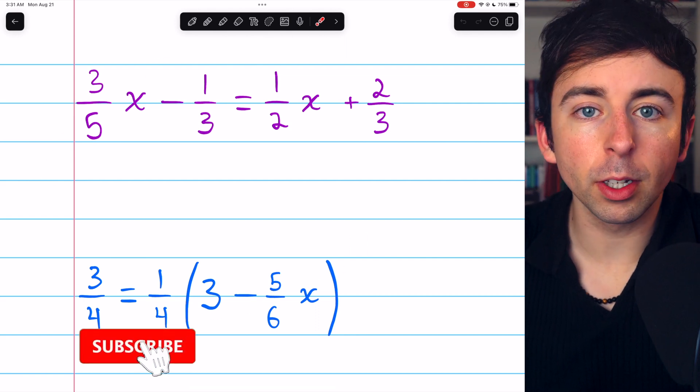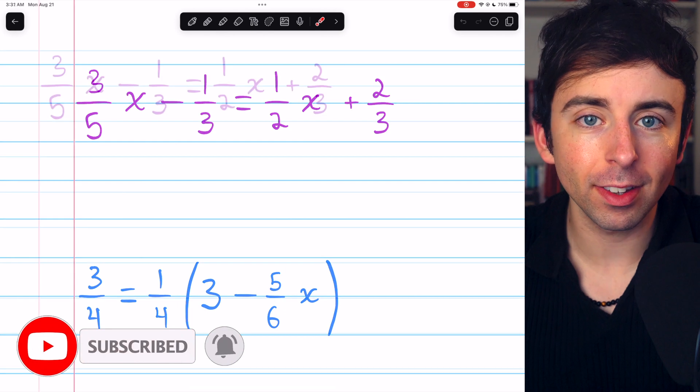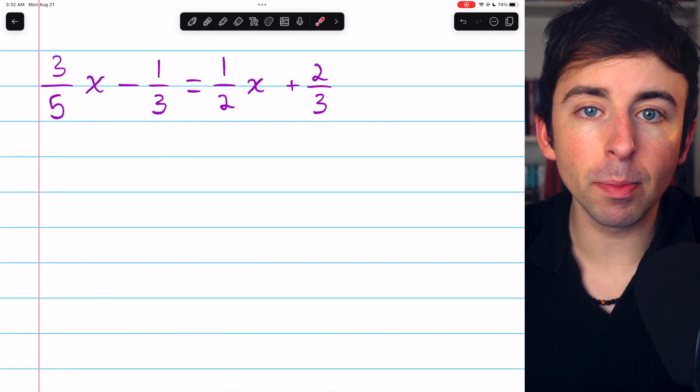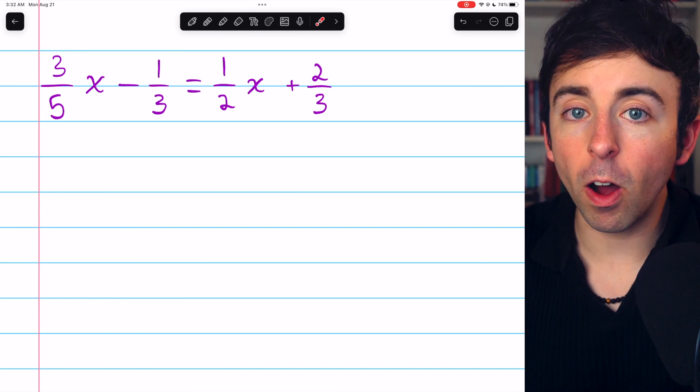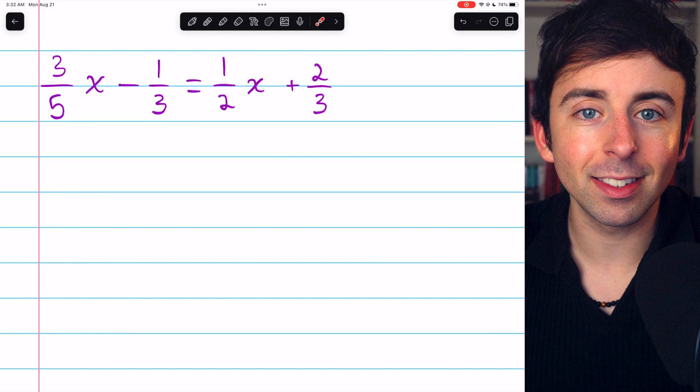Let's do a couple of examples to learn how to solve multi-step equations with fractions. Remember, to solve an equation like this one, we need to gather all variable terms to one side and all constant terms to the other side. Then we can finish getting the variable by itself.